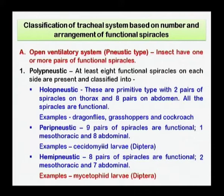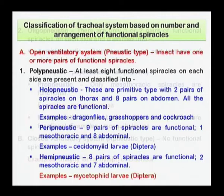Hemipneustic type has 8 pairs of functional spiracles, with 2 spiracles — the mesothoracic or abdominal spiracles — becoming non-functional. The best example is muscophid larvae under the order Diptera.